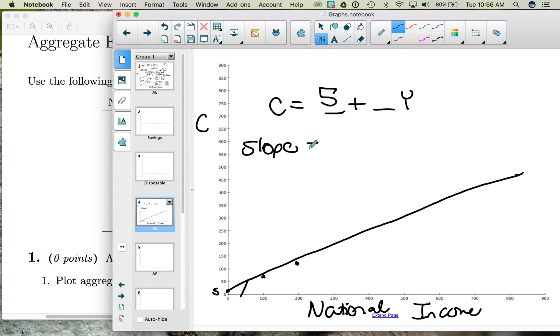So slope is rise over run. So in this case, it's going to be the change in consumption divided by the change in income. Ultimately, we want to know how we get from this point here to that point there.